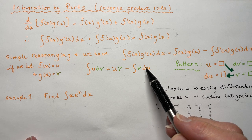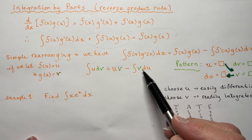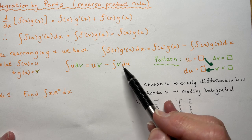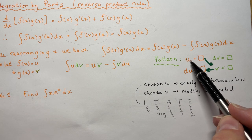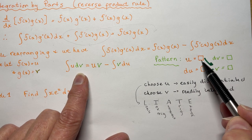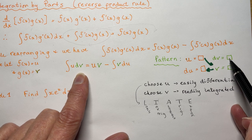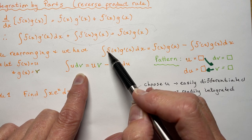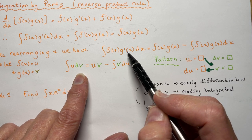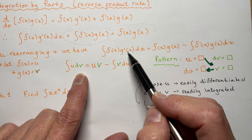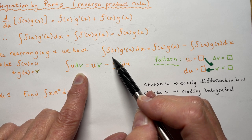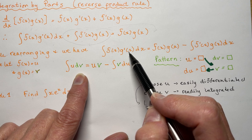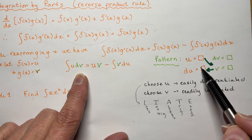This is going to become much more clear as we go through a few examples. Now the pattern that we're following is: I'm saying let u be something and dv be the other thing. So I have to choose one of these two parts of my integral to be a derivative and one to not be. One I'm going to take the derivative of, the other I'm going to take the integral of.